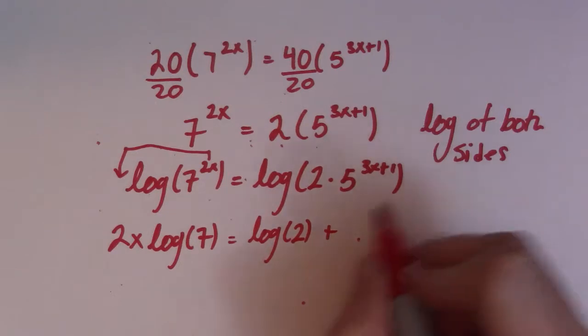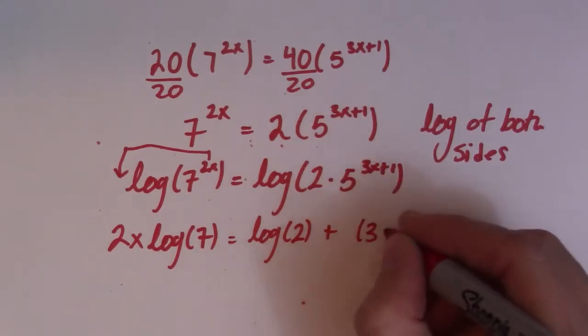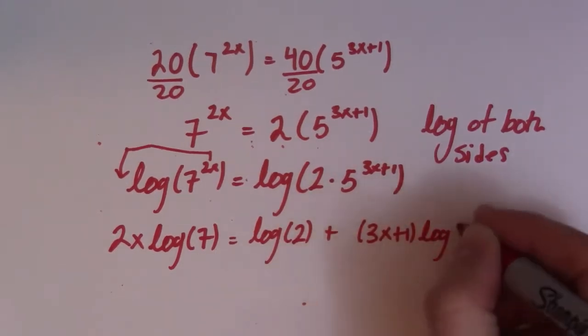Now, because this is an exponent inside of that log, which I'm about to write, I can take it down and I can write it like this. 3x plus 1 log of 5.